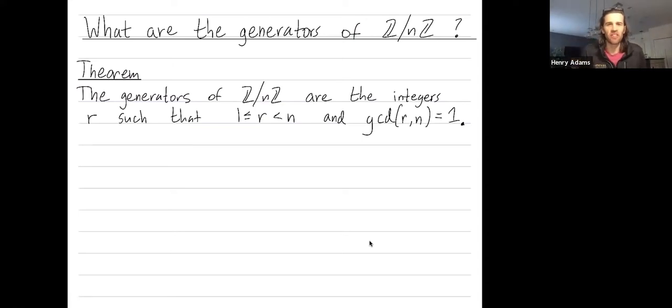Hey folks! So I want to explain what the generators of the group Z mod nZ are. I'll explain some of the relevant terms as we go. But the main theorem is that the generators of Z mod nZ are all of the integers r that are from 1 up to n minus 1, and which furthermore are relatively prime to n. In other words, the greatest common divisor of r and n has to equal 1. So GCD stands for the greatest common divisor. And we'll see some examples later where we compute some greatest common divisors of numbers.